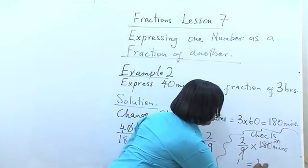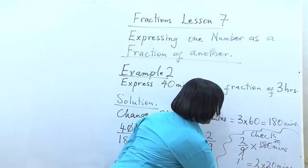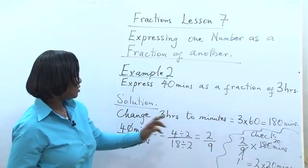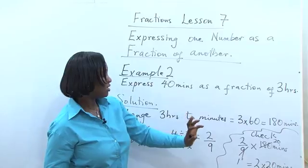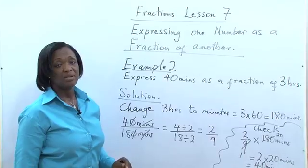This is equal to 2 times 20 minutes, and that gives us 40 minutes. So indeed, 2 ninths of 3 hours is 40 minutes.